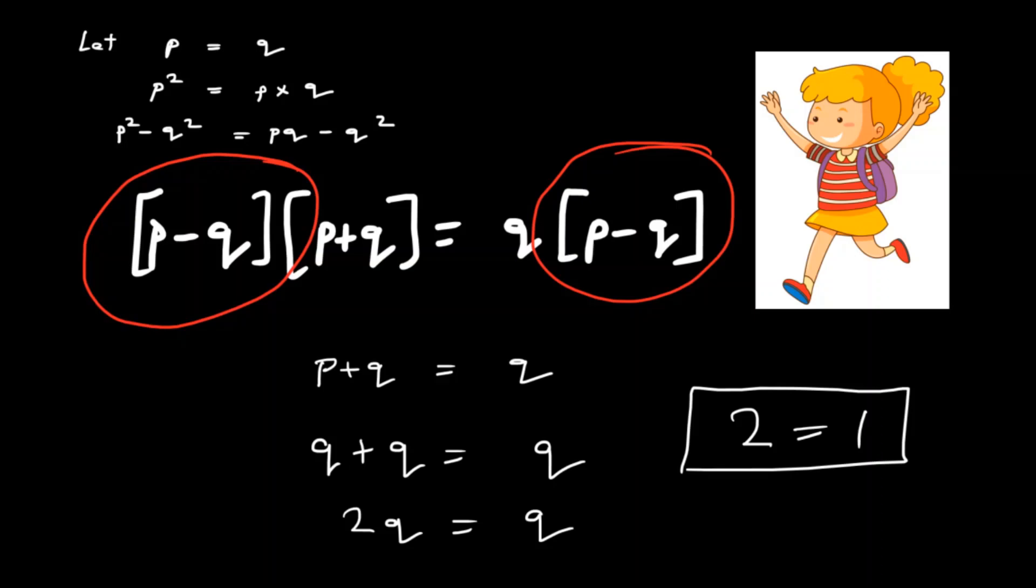Now, P minus Q, she shouted, is equal to 0 because P is equal to Q and you can't divide by 0.